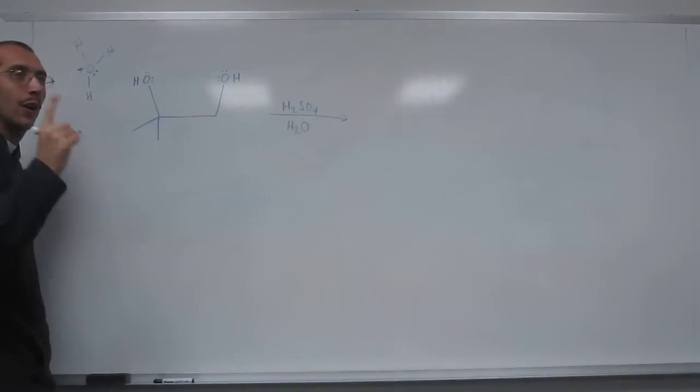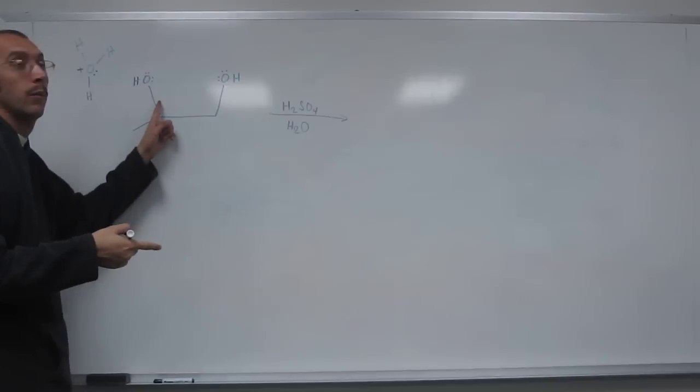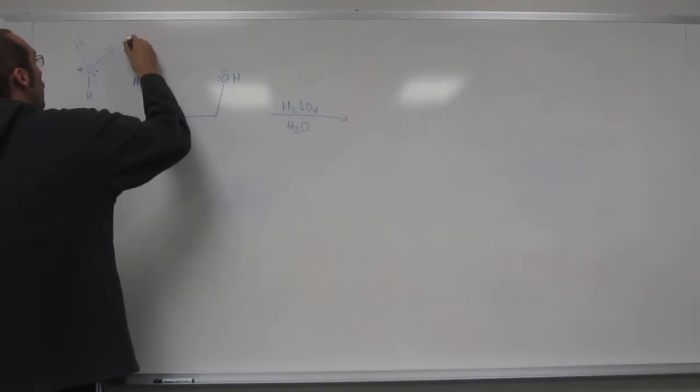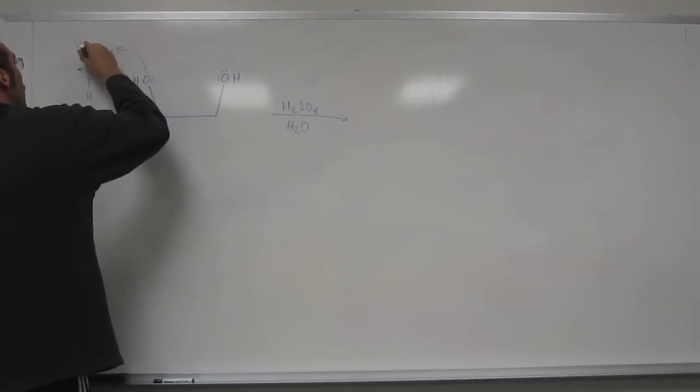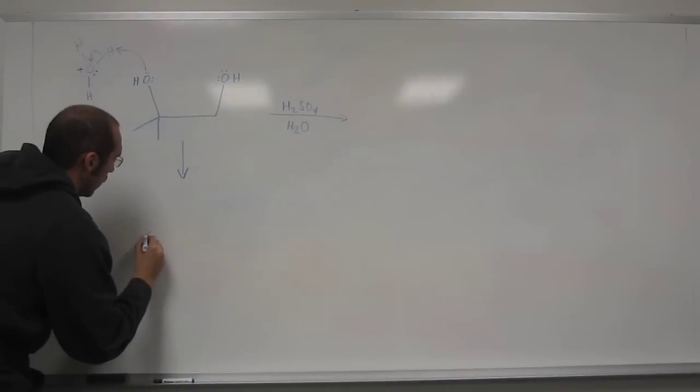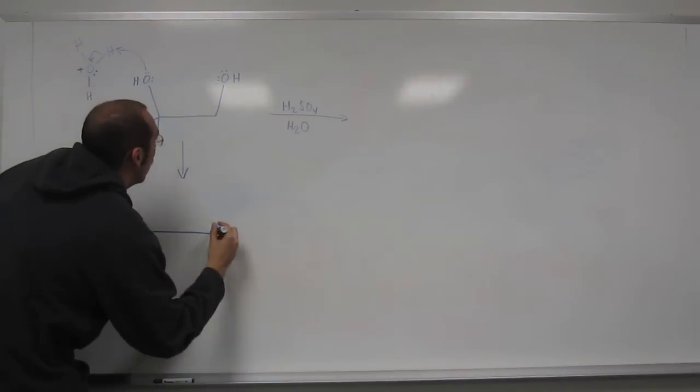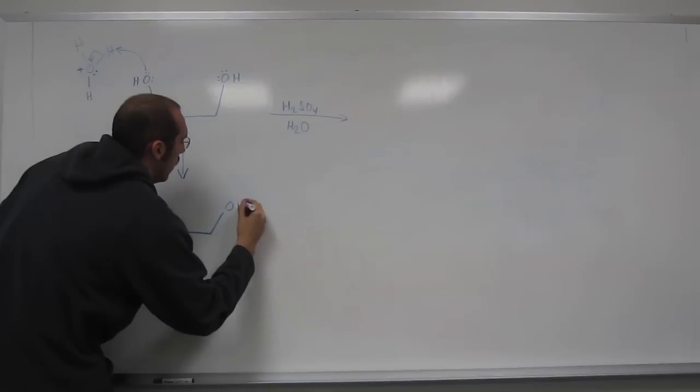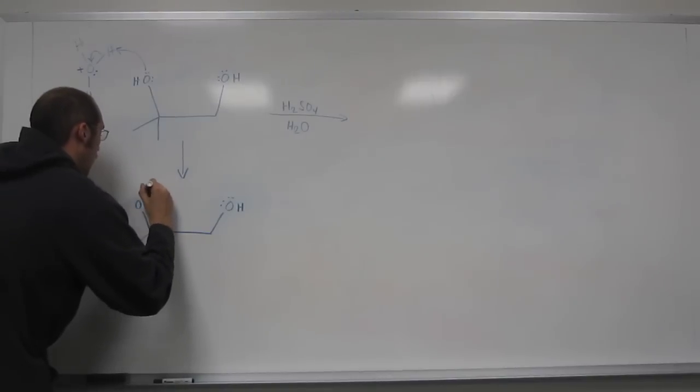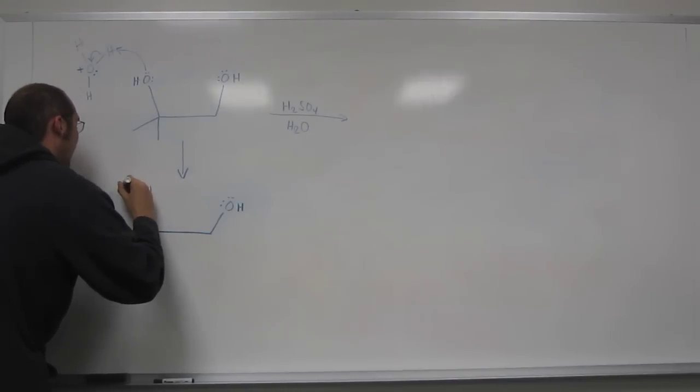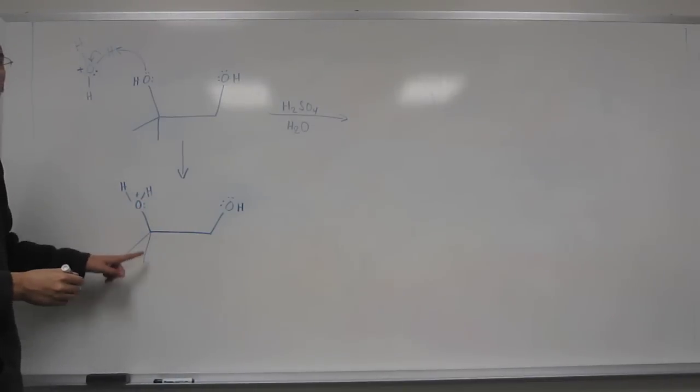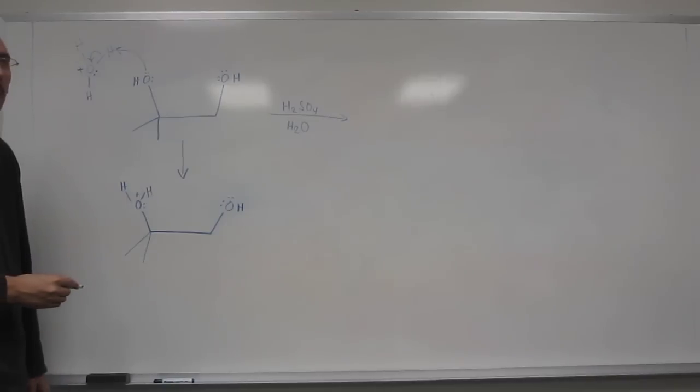The one that goes towards product is when you protonate this one here. Because if you protonate this one, well, here, I'll just show you. If we protonate here, what we make, of course, we turned a bad leaving group into a good leaving group now. And this will leave on its own because it's going to make a tertiary carbocation.